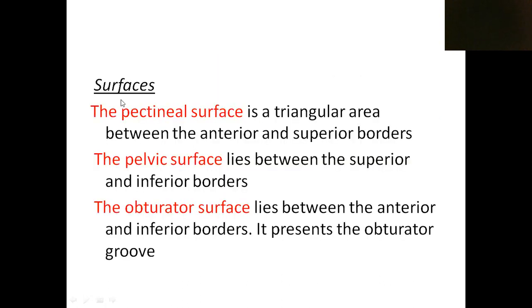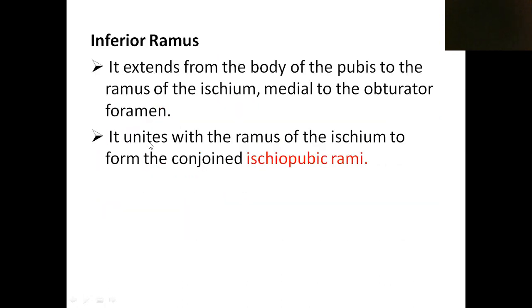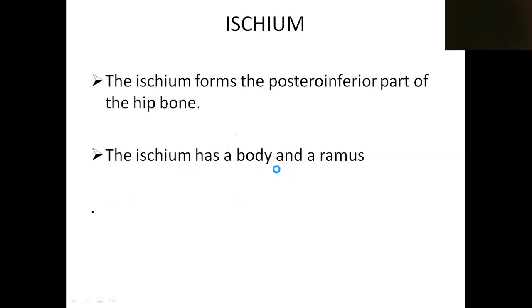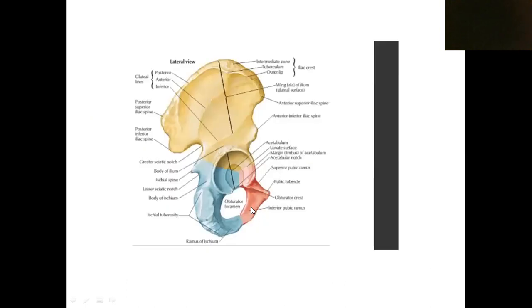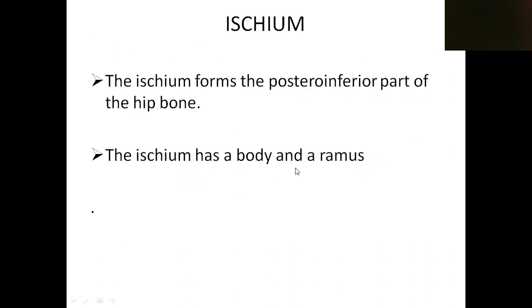The inferior ramus of the pubis joins with the ramus of the ischium to form the ischiopubic ramus. Now we are moving to the ischium, which forms the postero-inferior part of the hip bone.